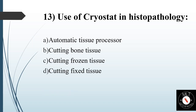Thirteenth question. Use of cryostat in histopathology. Option A: Automatic tissue processor. Option B: Cutting bone tissue. Option C: Cutting frozen tissue. Option D: Cutting fixed tissue. Answer is Option C: Cutting frozen tissue.